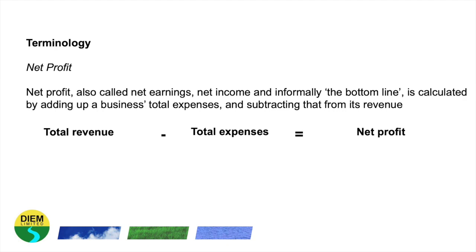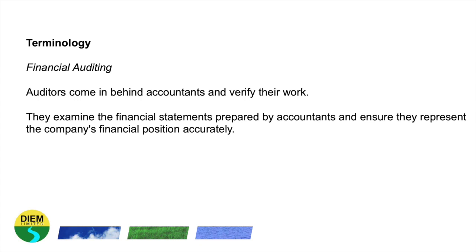Net Profit, also called Net Earnings, is the net income — informally known as the bottom line — and it's calculated by adding up a business's total expenses and subtracting that from its revenue. So Total Revenue minus all the expenses equals Net Profit. We've already talked about financial auditing: this is when auditors come in behind accountants and verify their work. They examine the financial statements prepared by accountants and ensure that they represent the company's financial position accurately.